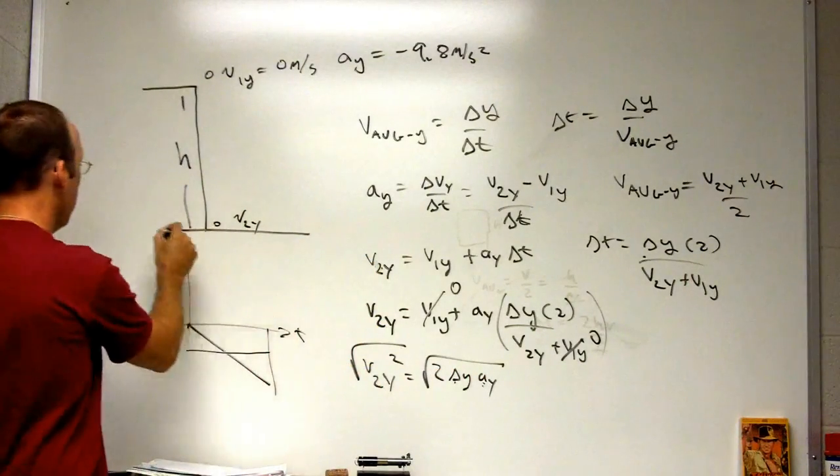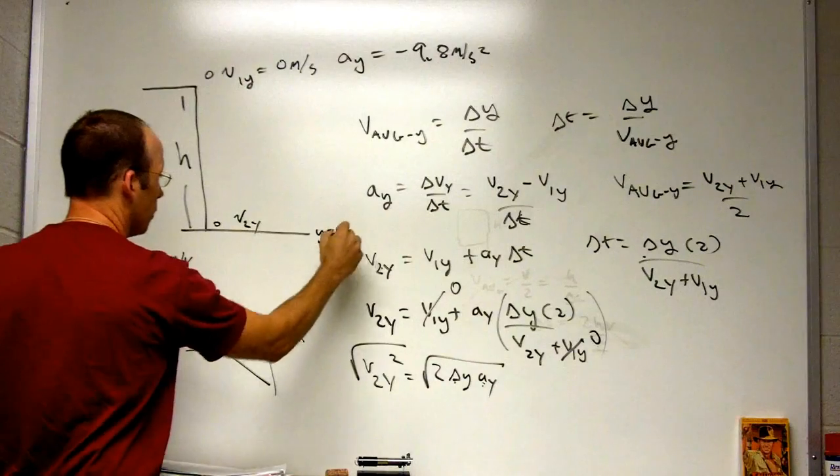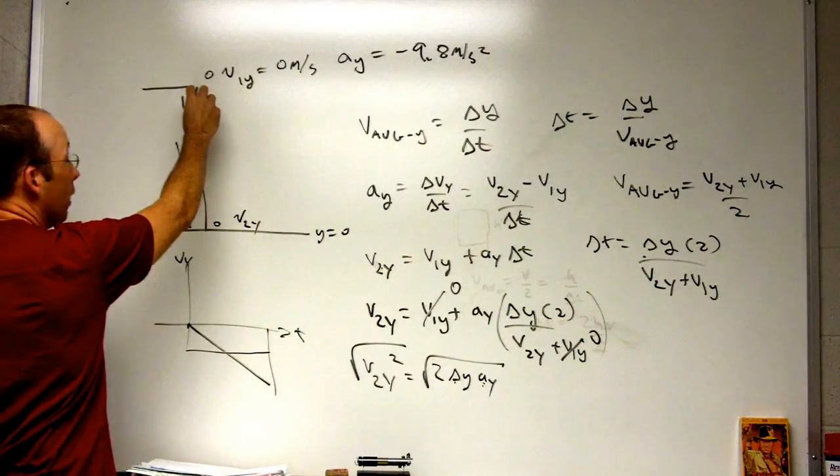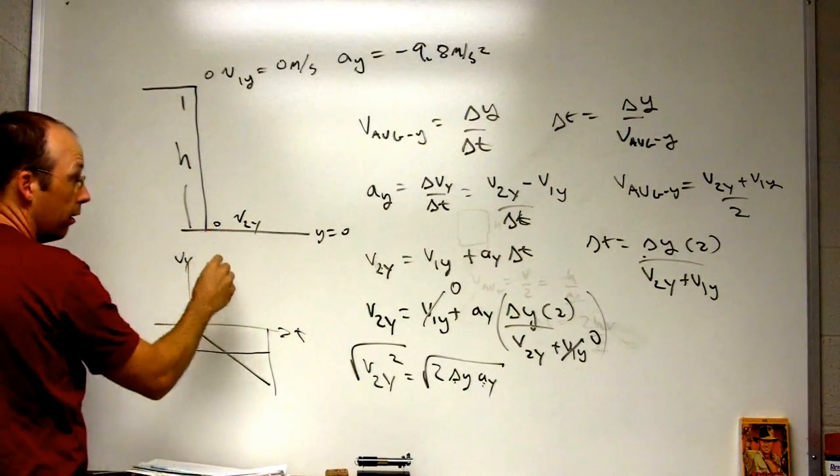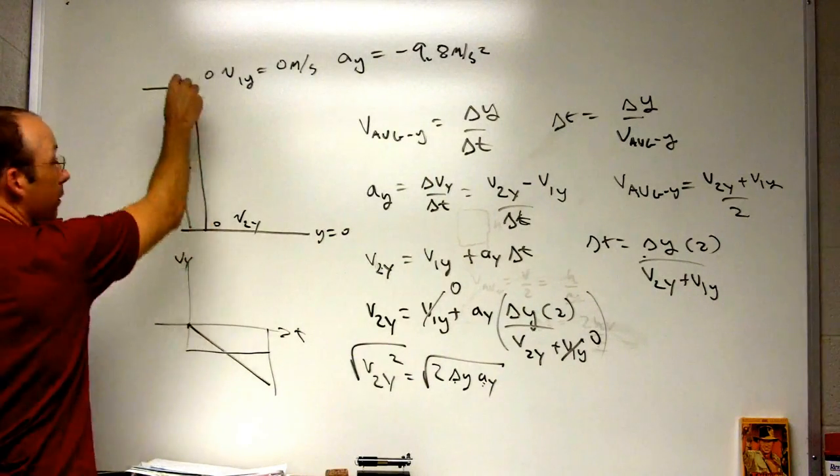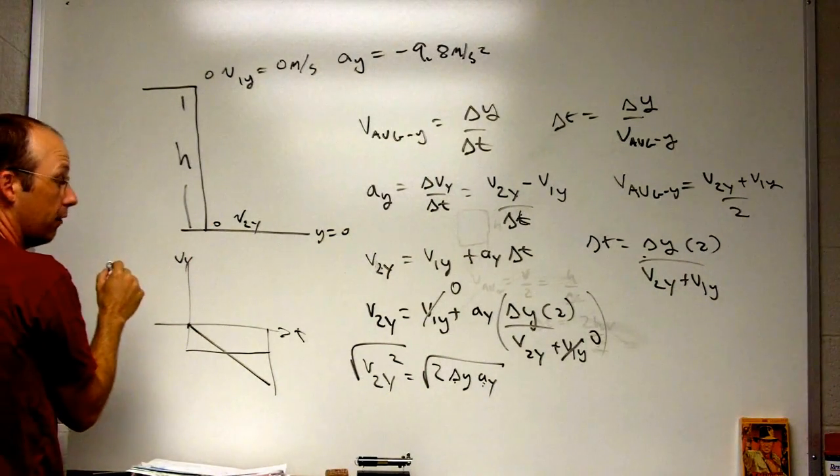Well, if I call this y equals zero, then y1 is h and y2 is zero. So zero minus h is going to be delta y negative h.